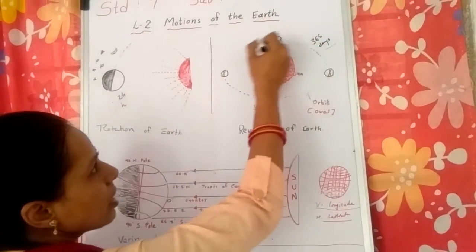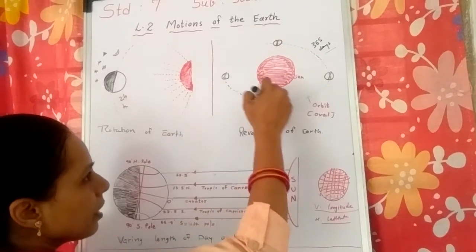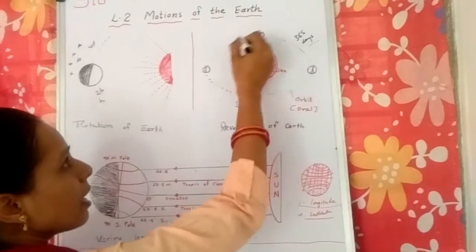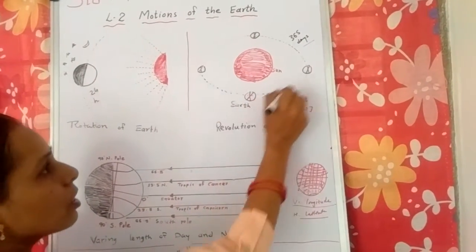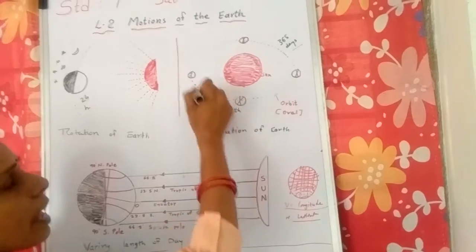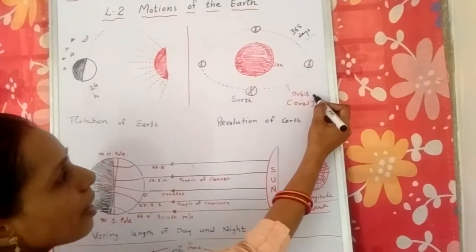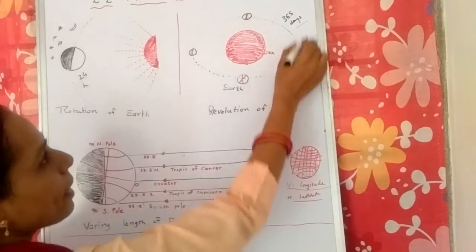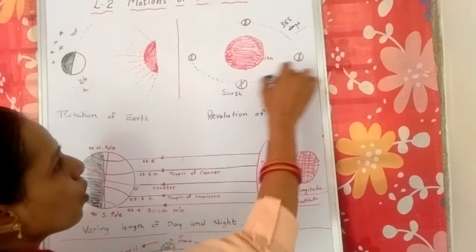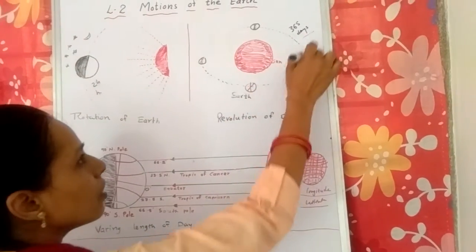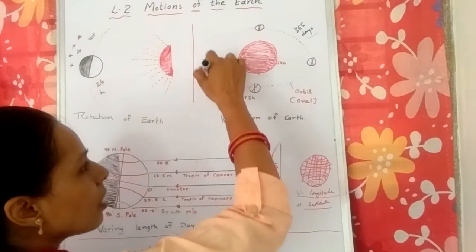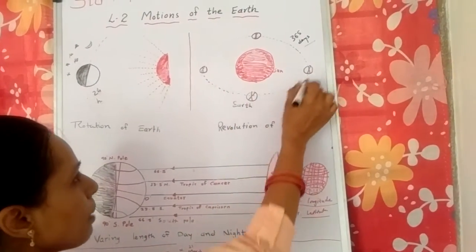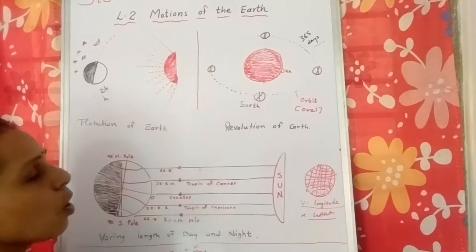You can see the imaginary line here. The imaginary line on which the earth moves around the sun is called an orbit. Its shape is oval — the earth revolves around the sun in an oval shape. This imaginary line is called an orbit.